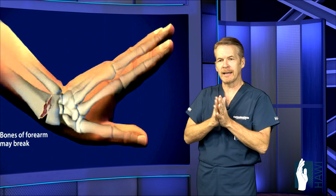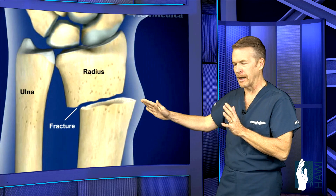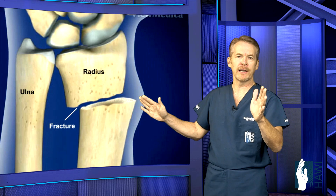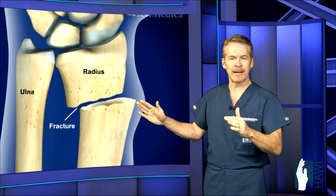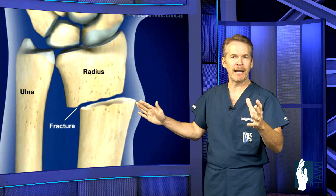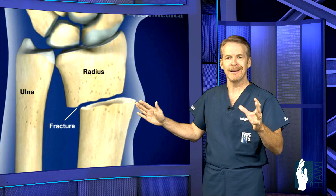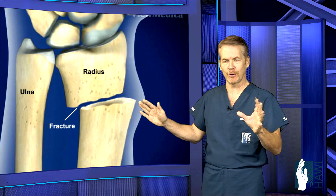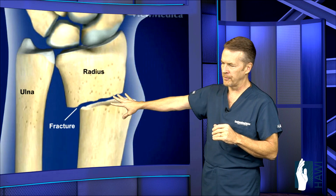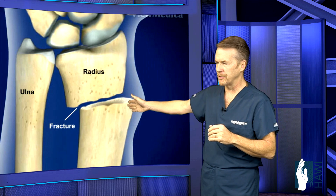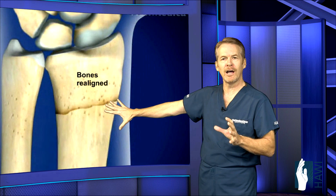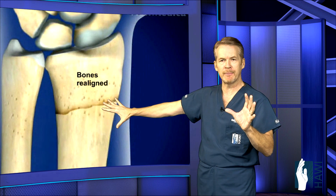Now let's take a look at an actual displaced radius fracture. Fractures usually are two types: either they're normally aligned, or if they're not, you've got to get them normally aligned. In a kid, you can usually pop them back in place and they'll stay. In an adult, usually it takes surgery to correct the problem. Here's a displaced fracture where the ends are not lined up at all, and the next image shows the bones realigned, or what we call anatomic alignment.